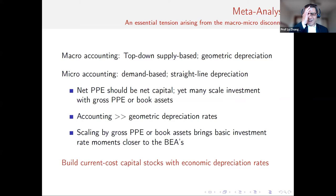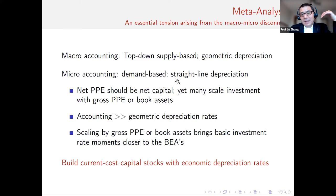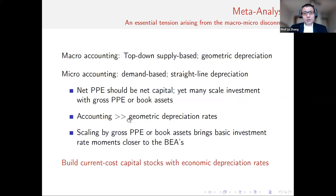Here is the essential tension — why there's so much confusion. In national accounting, based on a top-down supply-based approach, economic depreciation is geometric. Financial accounting is firm-based, demand-based, and everybody works with straight-line depreciation. If you take financial accounting CompuStat data seriously, net PPE is your capital. Many studies scale investment or profit using gross PPE or book assets because financial accounting depreciation rates are way higher than geometric depreciation rates. Scaling by gross PPE or book assets brings the basic moments way closer to BEA's — you see the macro-micro disconnect.